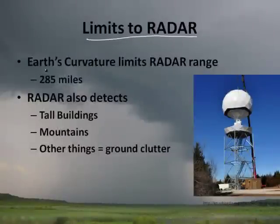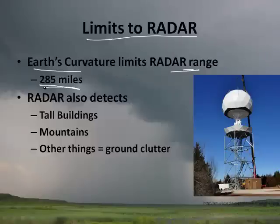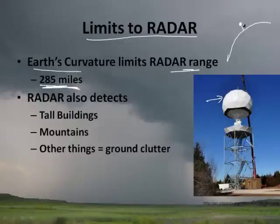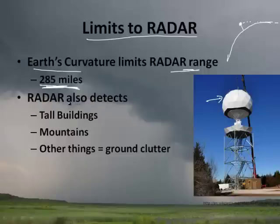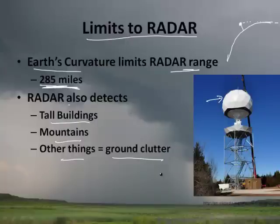There are limits to radar. The Earth's curvature limits radar range to about 285 miles — it can't see further because the Earth is curved, so if you've got your radar dish, the curvature eventually gets in the way. It also detects tall buildings, mountains, and other things called ground clutter — it'll even detect cars driving on the road. So you have to figure out what counts as weather and what's ground clutter.